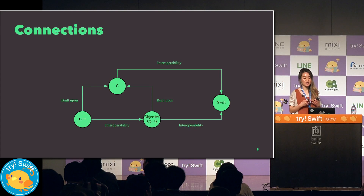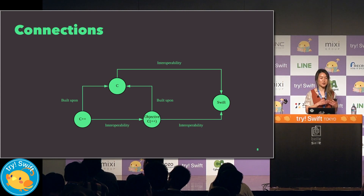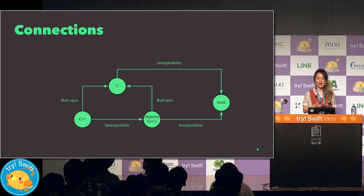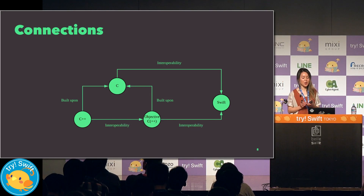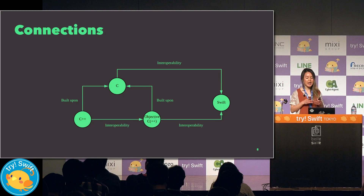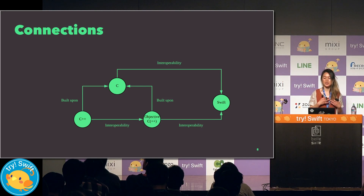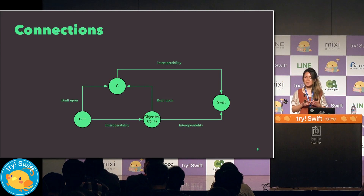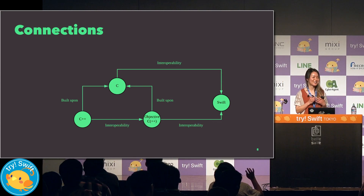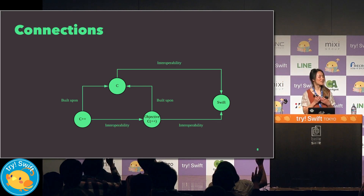Objective-C is a thin layer on top of C, and its object syntax is derived from another programming language, Smalltalk. Similar to C++, all C code can be compiled by the Objective-C compiler. In order to compile source files containing a combination of C++ and Objective-C, a language variant called Objective-C++ was used. You might have seen .mm files in Xcode — can I get a show of hands on who has seen .mm files? I think plenty of you have.